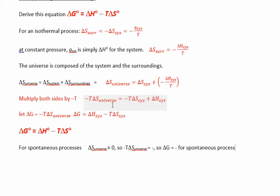The universe is really hard to measure, but now we can relate it to measuring the system, which is easy. Finally, if delta S of the universe is positive — greater than zero — then negative T delta S of the universe is negative, so delta G is negative for a spontaneous process. Delta G will be positive for a non-spontaneous process.